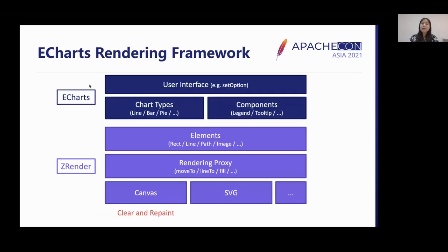Here is the rendering framework of eCharts and its underlying rendering engine, ZRender. All types of charts and components are composed of elements like rectangles, lines, and paths. In ZRender, we have a rendering proxy to draw those shapes, so that when defining a shape, we do not have to consider whether it's implemented with canvas, SVG, or other rendering engines. Today, we will focus on canvas rendering.